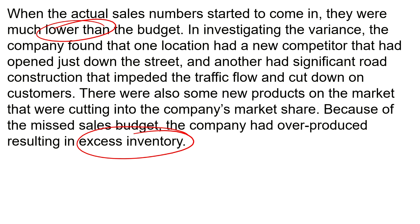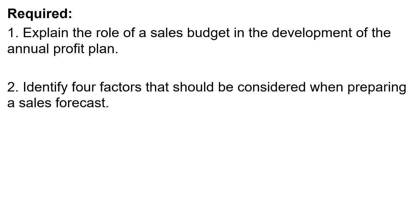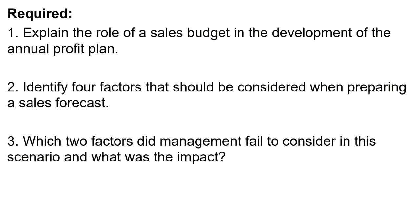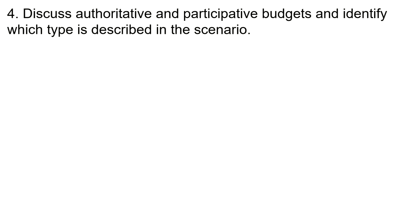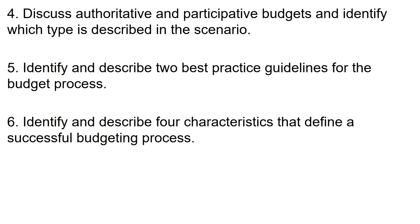We have seven different requirements. First, explain the role of a sales budget in the development of the annual profit plan. Second, identify four factors that should be considered when preparing a sales forecast. Third, which two factors did management fail to consider in this scenario, and what was the impact? Fourth, discuss authoritative and participative budgets and identify which type is described in this scenario.